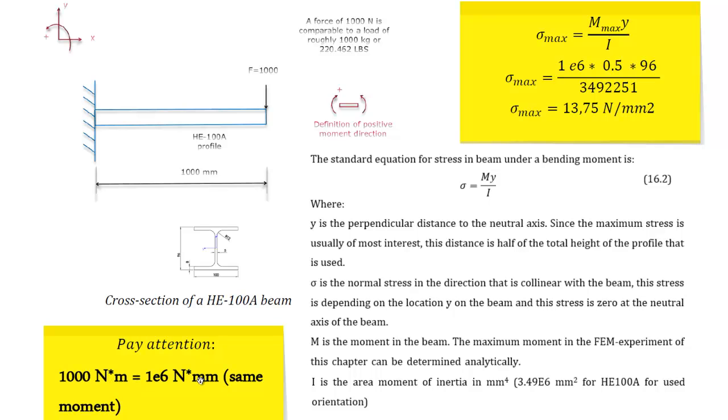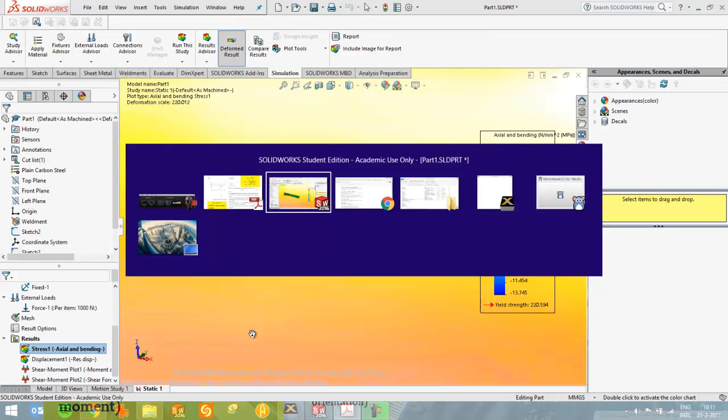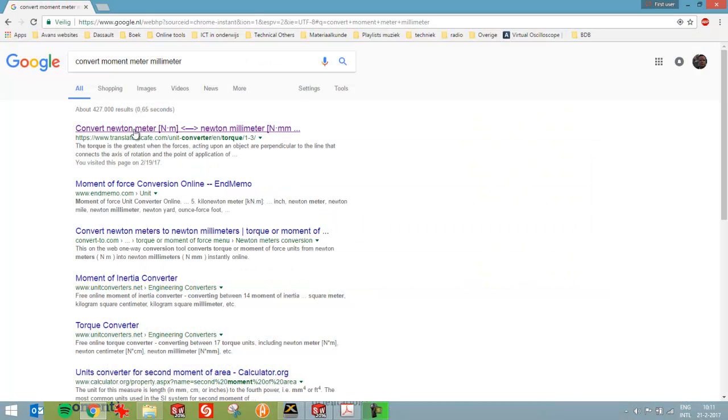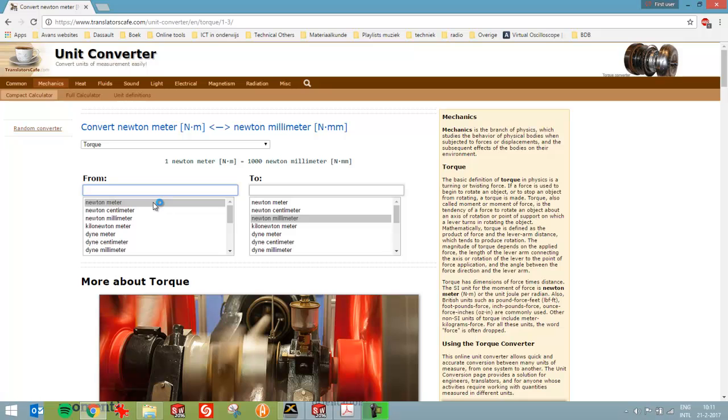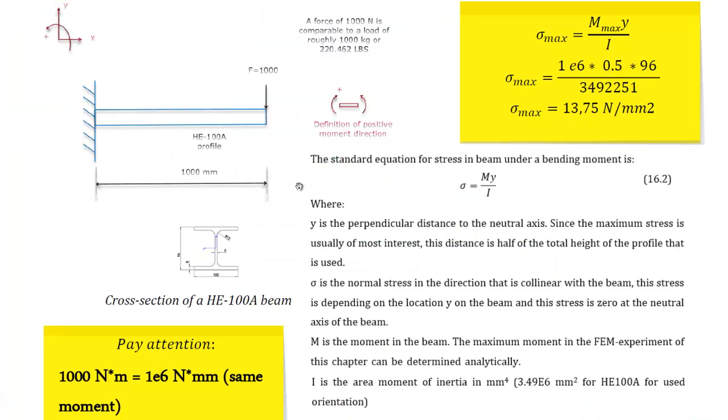So whenever you want to be sure of that, use for example a thing that I've put open over here. Search Google for convert moment meter millimeter. And the first result will be quite useful for you. You want to go from a thousand Newton meter to Newton millimeter. And you see here that that's a million. So just to make sure, it's always good to check your results. Double check it. And a unit converter on the internet is a good and fast way of doing that.